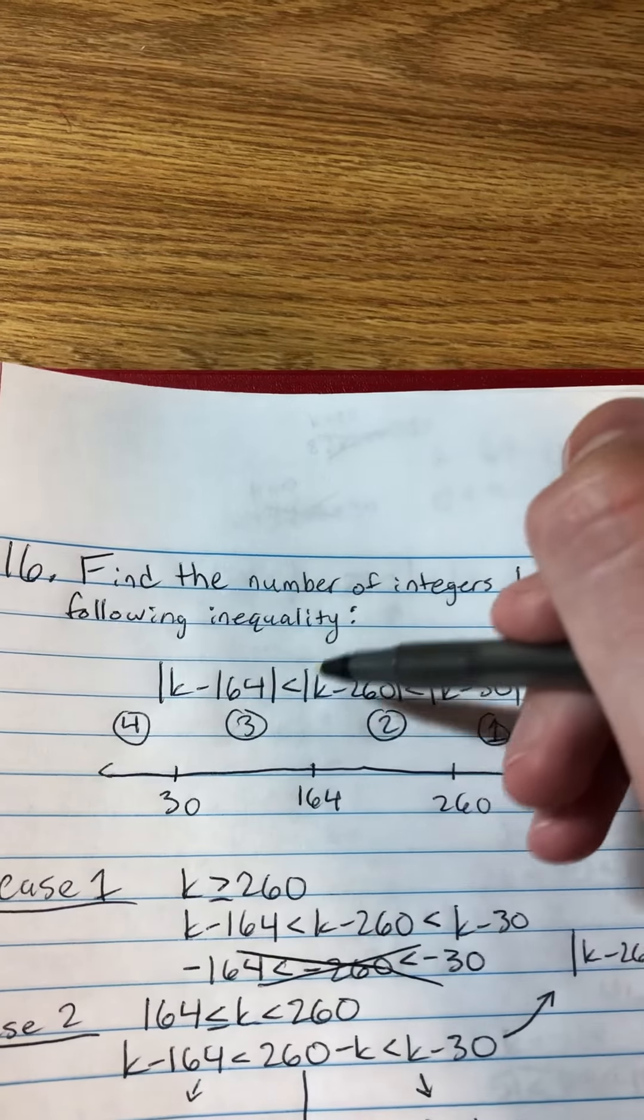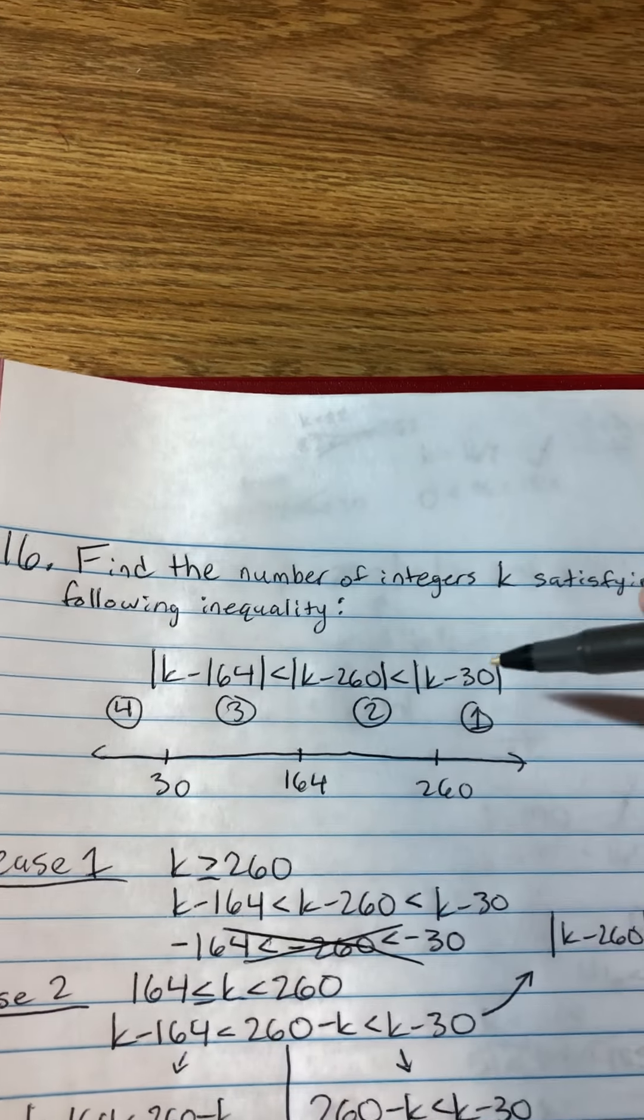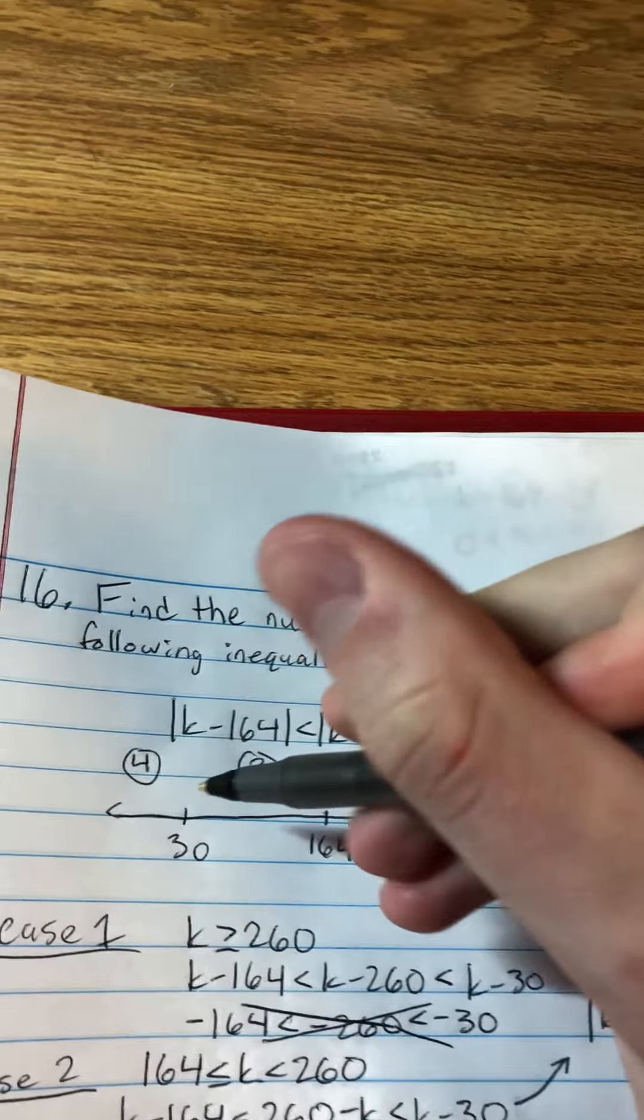So I started off making a number line with 30, 164, and 260. And I labeled these 1, 2, 3, and 4, the four cases.